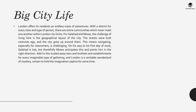Another theme is that of big city life. London offers its residents an endless maze of adventures, with a district for every class and type of person, so that there are entire communities which have never met each other within the city limits. For Galahad and Moses, the challenge of living here is the geographical layout of the city — the streets were built centuries ago and navigating them, especially for newcomers, is challenging. On his way to his first day of work, Galahad is lost, but thankfully Moses anticipates this and points him in the right direction. With tucked-away bars, brothels, and establishments for every imaginable type of gathering, London is a veritable wonderland of mystery.